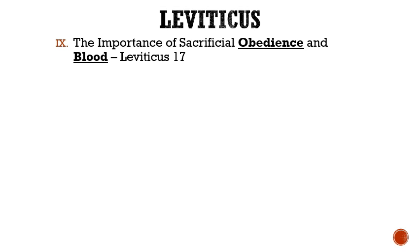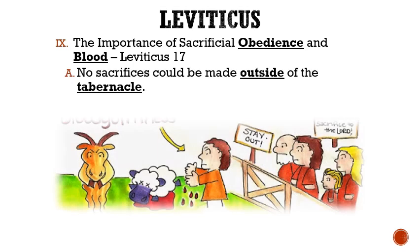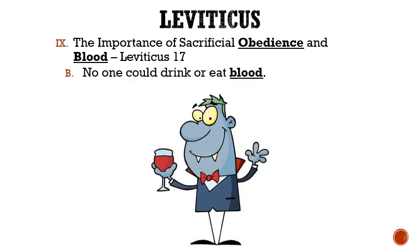Roman numeral 9: The importance of sacrificial obedience and blood. Letter A: No sacrifices could be made outside of the tabernacle. This chapter begins by declaring that all sacrifices were to be made in the tabernacle, and if anyone sacrificed outside of the tabernacle, then they were supposed to be excommunicated from the people. Secondly, no one could drink or eat blood. It is then declared that if anyone drank or ate blood, then the Lord would kill him because he says that the life is in the blood, and it is what makes atonement for sin.